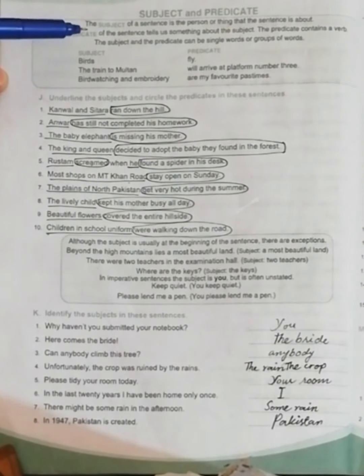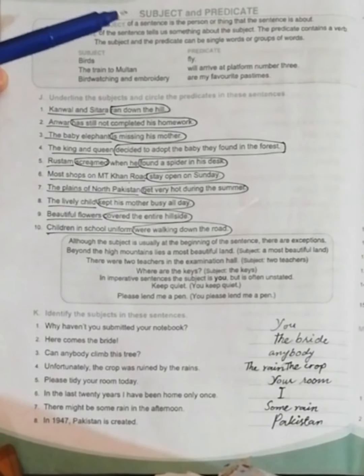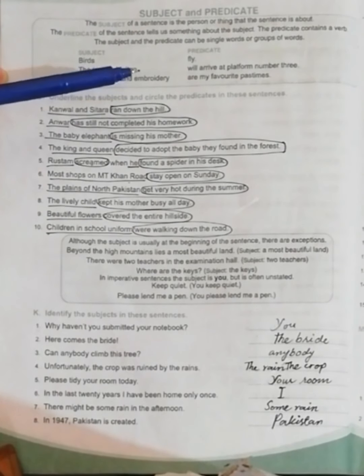The subject and the predicate can be single words or group of words. Like you can see here, 'birds' is the subject and 'fly' is predicate. 'The train to Multan' is subject, 'will arrive at the platform number three' is predicate.